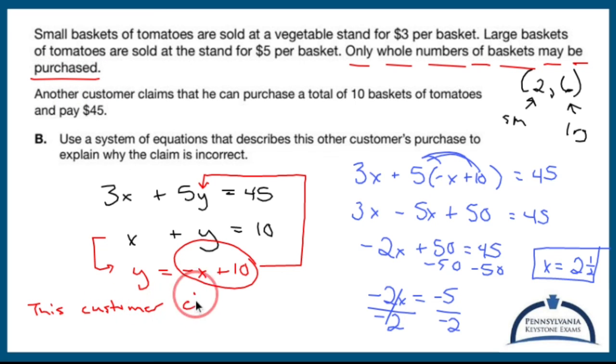So this customer claims to have purchased two and a half baskets. Since I'm running out of room, I'll explain the rest without writing it down. But you can't buy two and a half small baskets because you can only buy whole numbers of baskets.